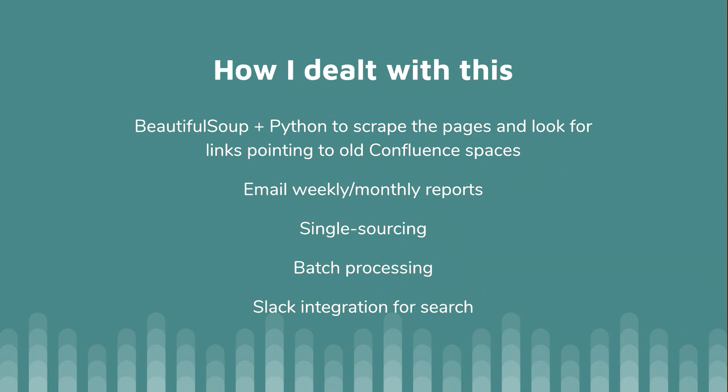I built a script using Beautiful Soup and Python that goes through and scrapes all the pages in our documentation looking for links — similar to what Juan did. At my old company we were using Confluence, so I was looking for links pointing to older versions of our Confluence spaces. The script would crawl all the pages in our documentation hierarchy, look at those links, and pick out all the ones pointing to the wrong place. I set it up so it would email me with a report of all the links that are wrong and all the links I need to fix — a lot more useful than just knowing you have hundreds of pages of problems.